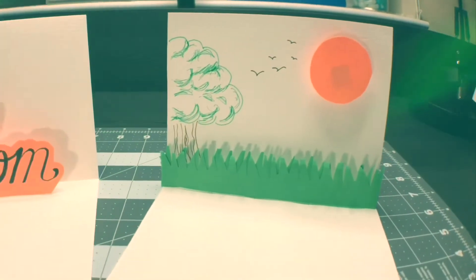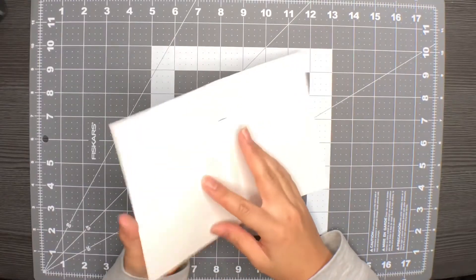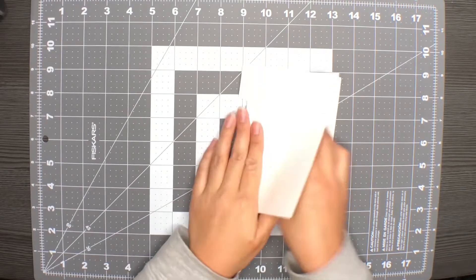Simple pop-up number two. Just like the first card, we're going to make two cuts and invert that middle section.